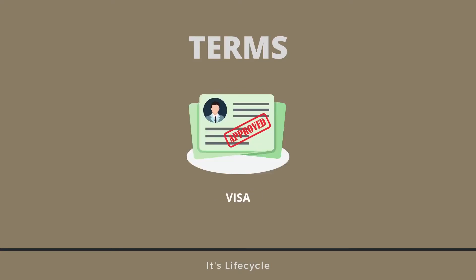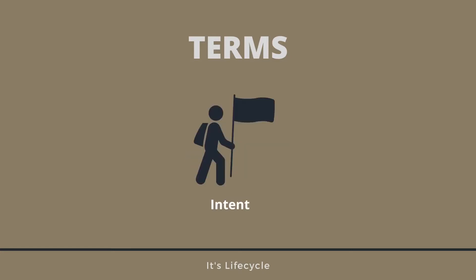Visa is the permit issued by a country. Intent of purpose — intent of purpose is related to long-term or short-term stay. Because there are jobs and services but they are limited, it defines whether your stay is long-term or short-term.